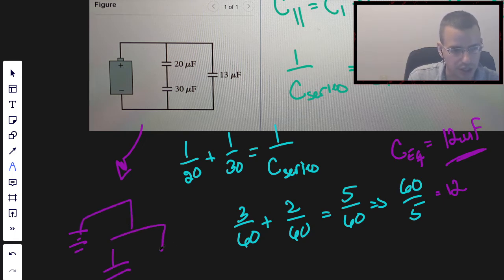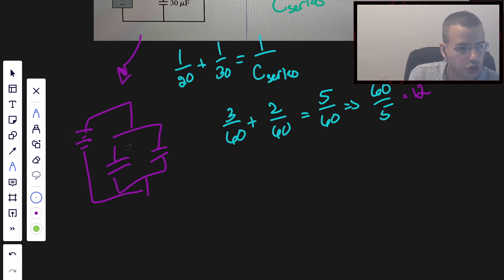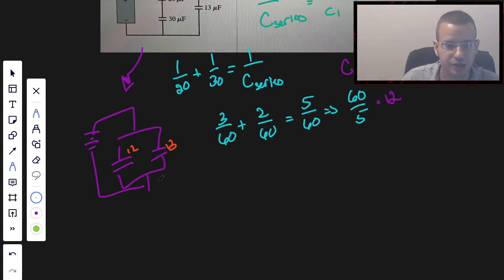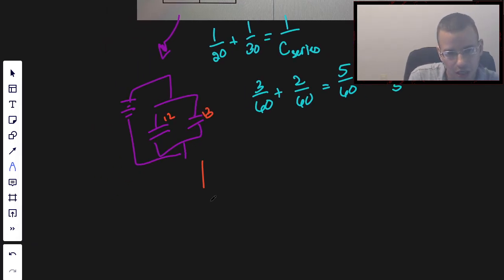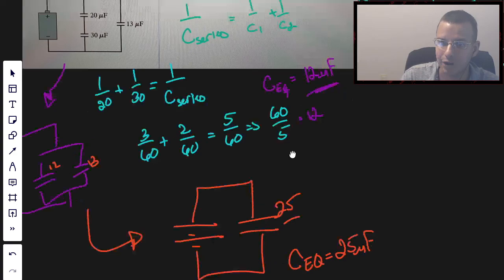So then I'm going to redraw the picture. So we now have 12 and 13. Now they are in parallel, and the way we add parallel capacitances is by simply adding each of them. So 12 plus 13 is 25. Capacitance equivalent is 25, and the units are microfarads.